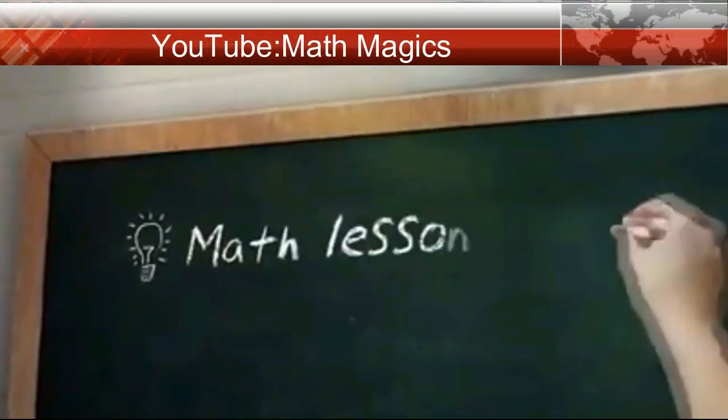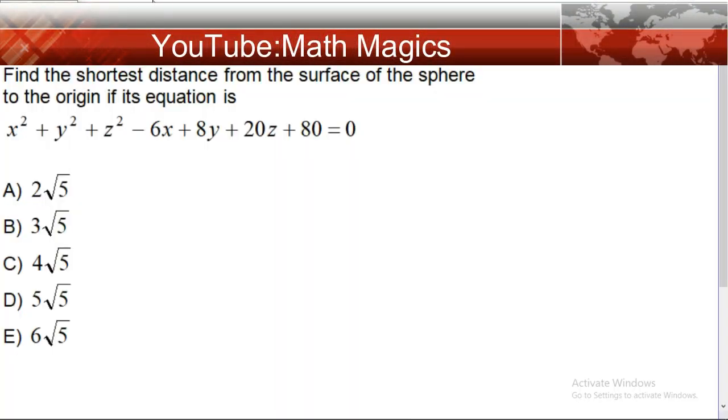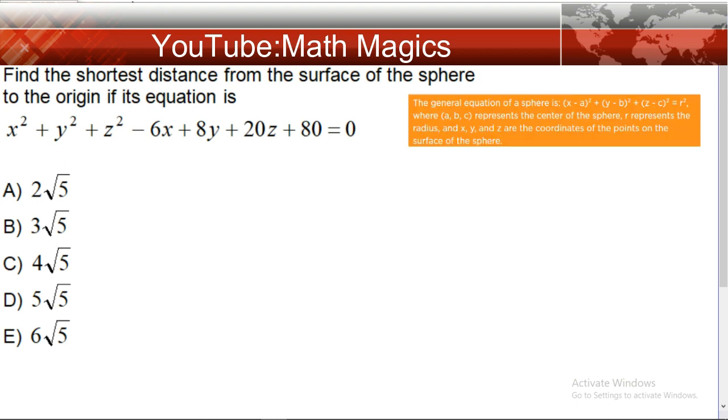Hello everyone, welcome to my channel. Today we are going to find the shortest distance from the surface of the sphere to the origin. Given in the question: x² + y² + z²